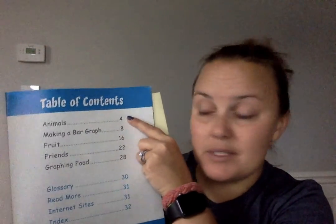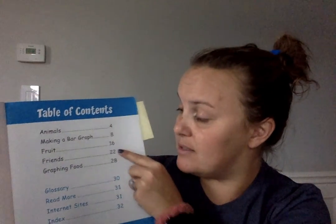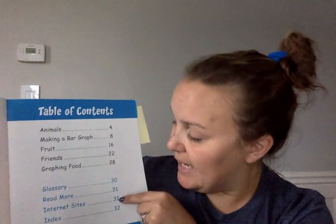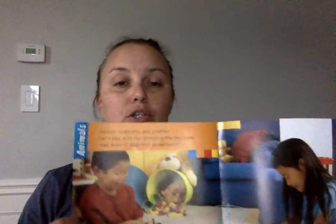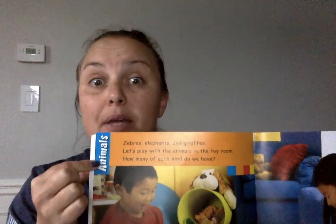The first section is going to be all about animals. The second section is making a bar graph. Then we have fruit, friends, and graphing food. Then we have a glossary — that's where certain vocabulary words and definitions are written. We also have read more, internet sites, and an index. The heading here links back to the table of contents, which will give us a moment to think about what each section will be about.